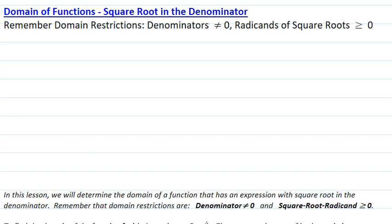Remember that the main restrictions are: denominator must not equal zero, and if we have a square root radicand, that radicand must be greater than or equal to zero.